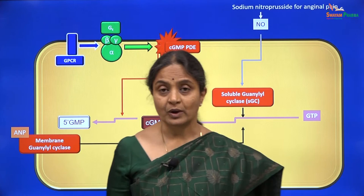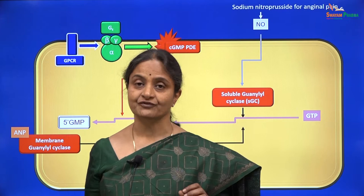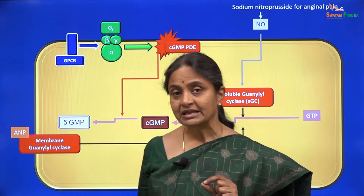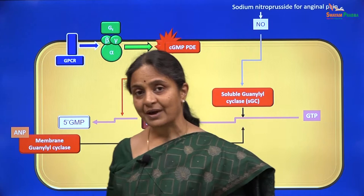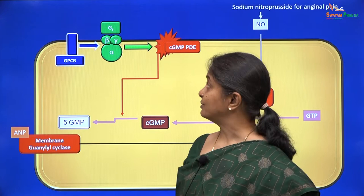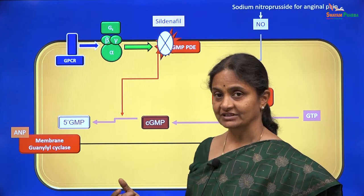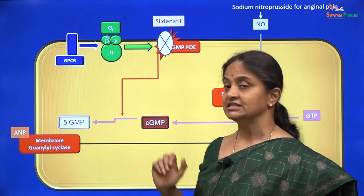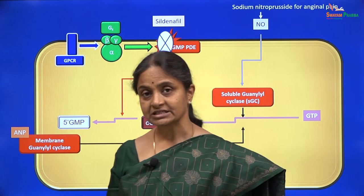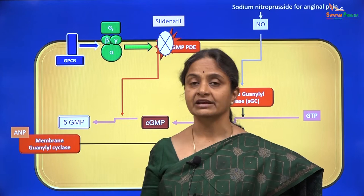There is one other instance where relaxation of blood vessels is important — the treatment of impotence. Erection of the penis occurs when it is filled with blood, when there is vasorelaxation of the blood vessels in the penis, and that can be impaired in impotence. Treatment of impotence is by the drug Viagra, whose chemical name is sildenafil citrate. Sildenafil is an inhibitor of cGMP phosphodiesterase; by inhibiting this enzyme it increases cGMP levels in the vascular smooth muscle cell, which increases vascular supply and therefore erection.